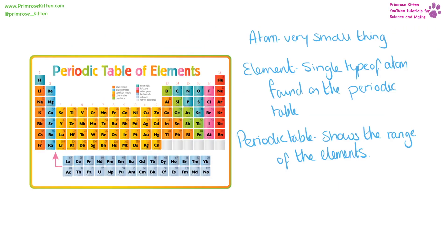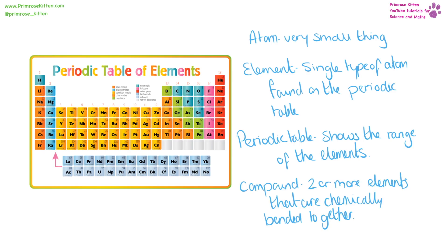Here we have our wonderful, beautiful periodic table — a list of all the elements known to exist. Elements are a single type of atom, and the word atom is actually Greek for 'uncuttable.' The periodic table tells us a huge amount about elements and there are still loads yet to be discovered. A compound is two or more elements that are chemically bonded together — that's the important thing: chemically bonded together.